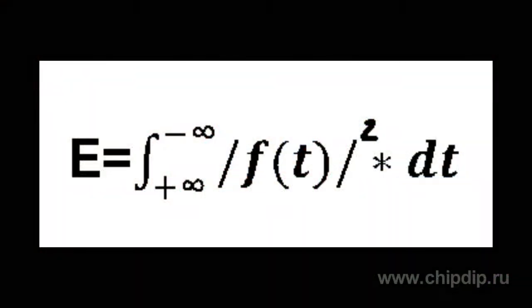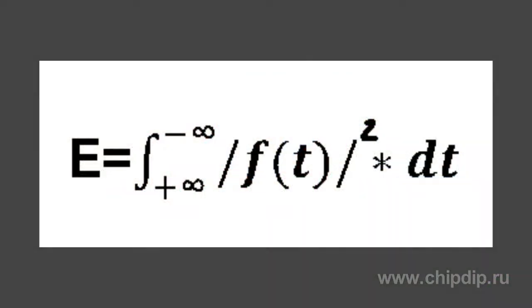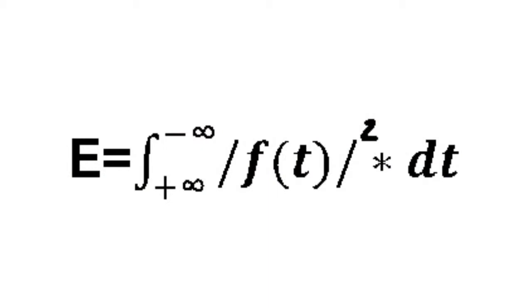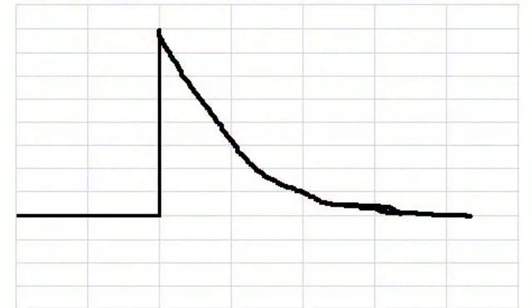For non-zero power signals, the equation e equals infinity is true. Energetic signals have a finite value of normalized energy e. For them, the equation p equals zero is true.